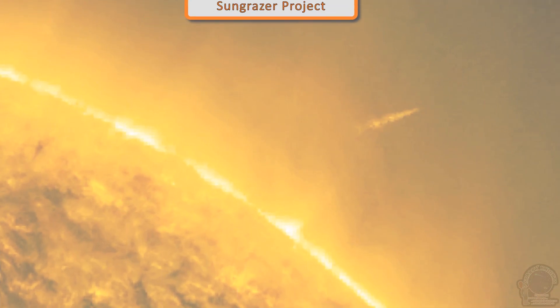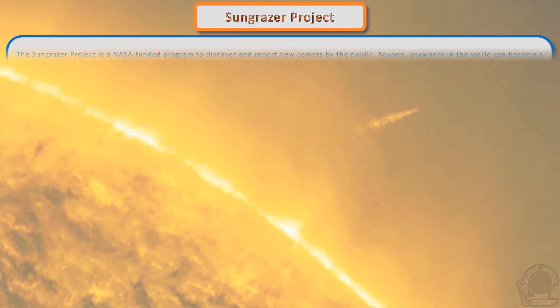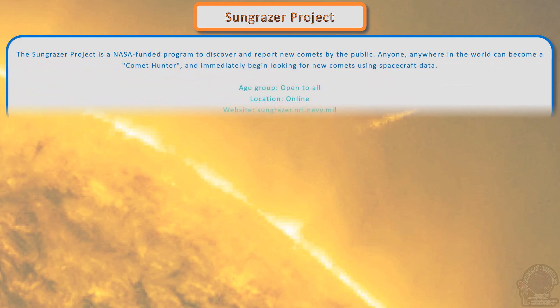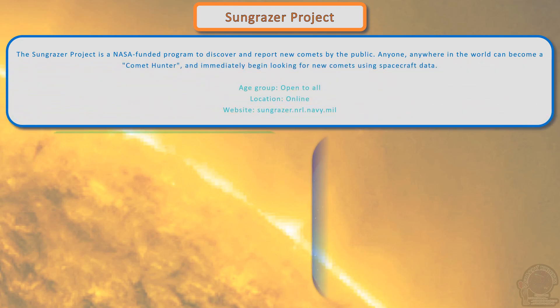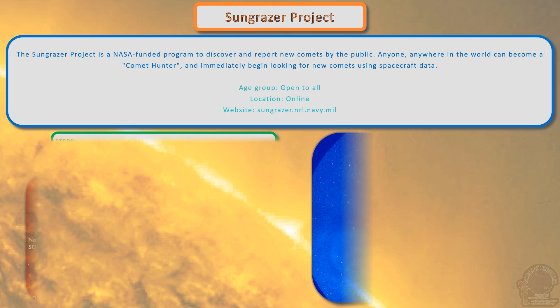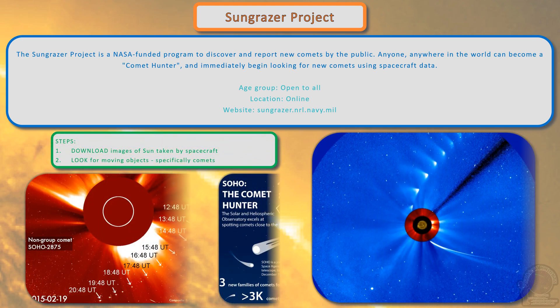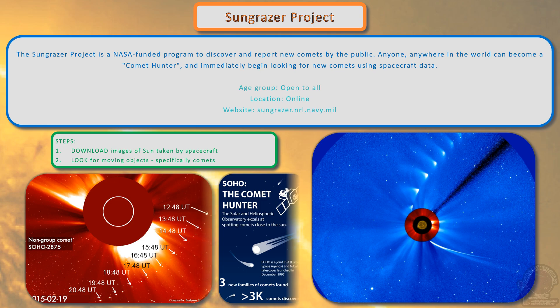The Sun Grazer Project is a NASA-funded program to discover and report new comets by the public. Anyone anywhere in the world can become a comet hunter and immediately begin looking for new comets using spacecraft data. Go to the website, download images of the Sun taken by the spacecraft, and look for moving objects between consecutive frames to discover new comets.